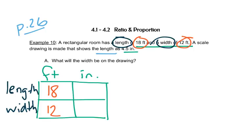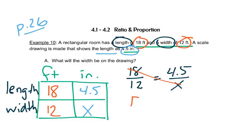The drawing has a length of 4.5 inches. And we don't know the width. So we can use that now to set up our proportion. We'll cross multiply: 18 times X is 18X, and 12 times 4.5 is 54.